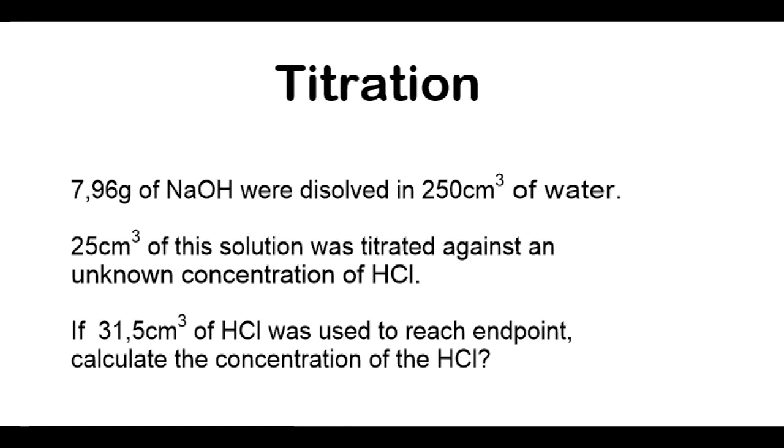Today we will be discussing titrations. Looking at the question we have, 7.96 grams of NaOH were dissolved in 250 cm³ of water. 25 cm³ of this solution was titrated against an unknown concentration of HCl. If 31.5 cm³ of HCl was used to reach endpoint, calculate the concentration of the HCl. To do this titration, we will actually do this question in the lab and see where we get these values and how we can use them to find the concentration of the unknown HCl.